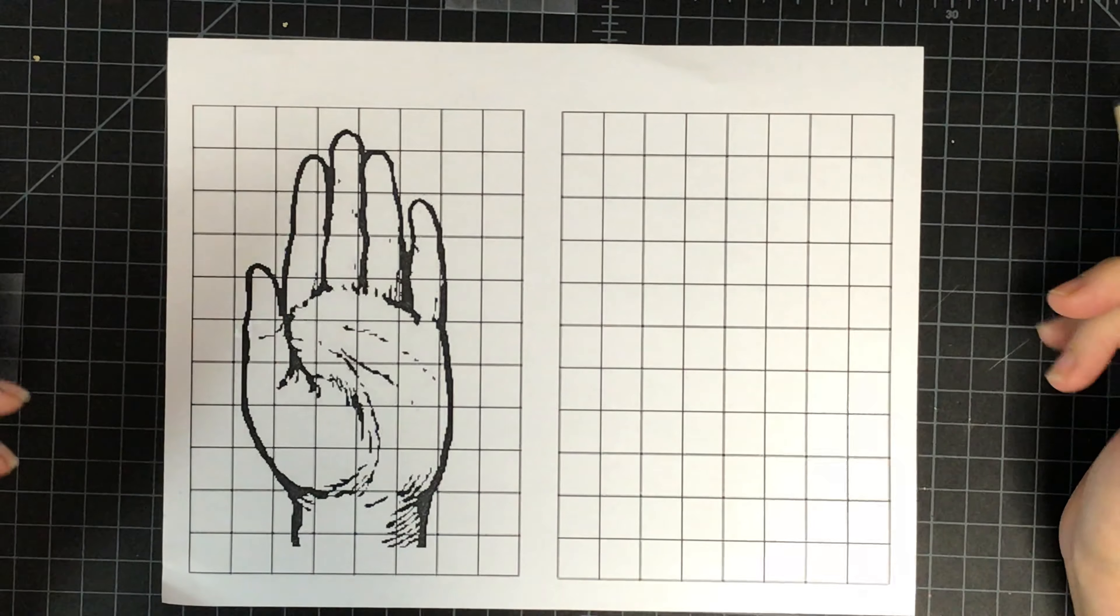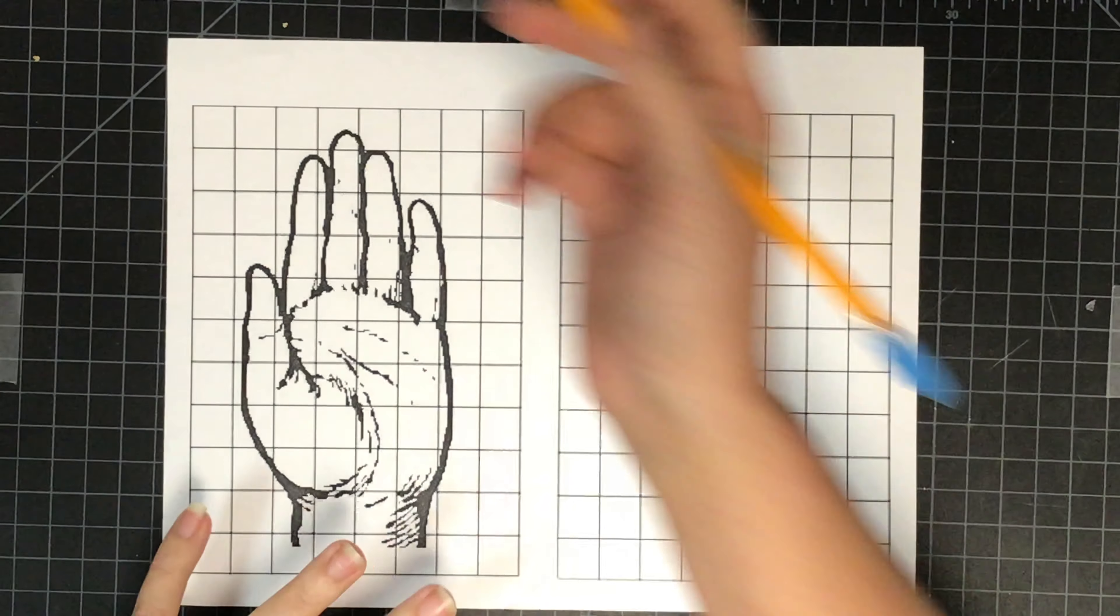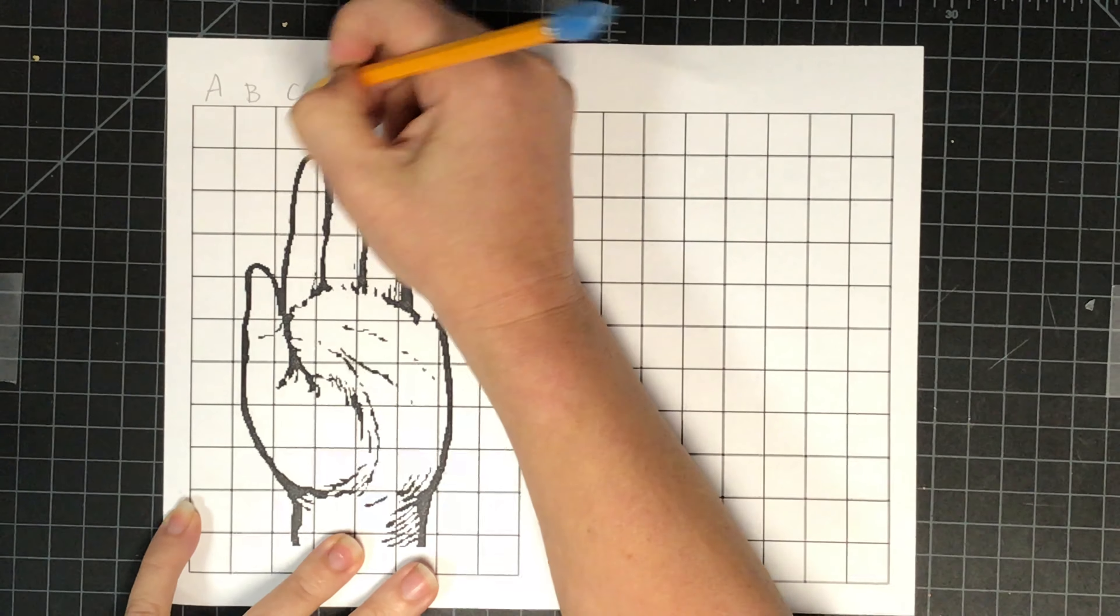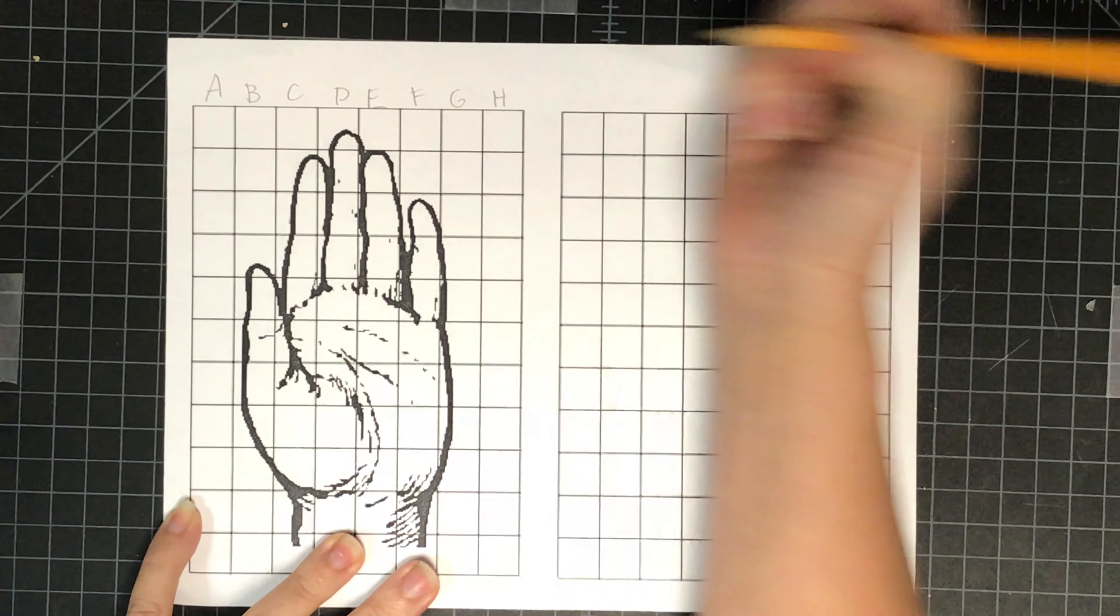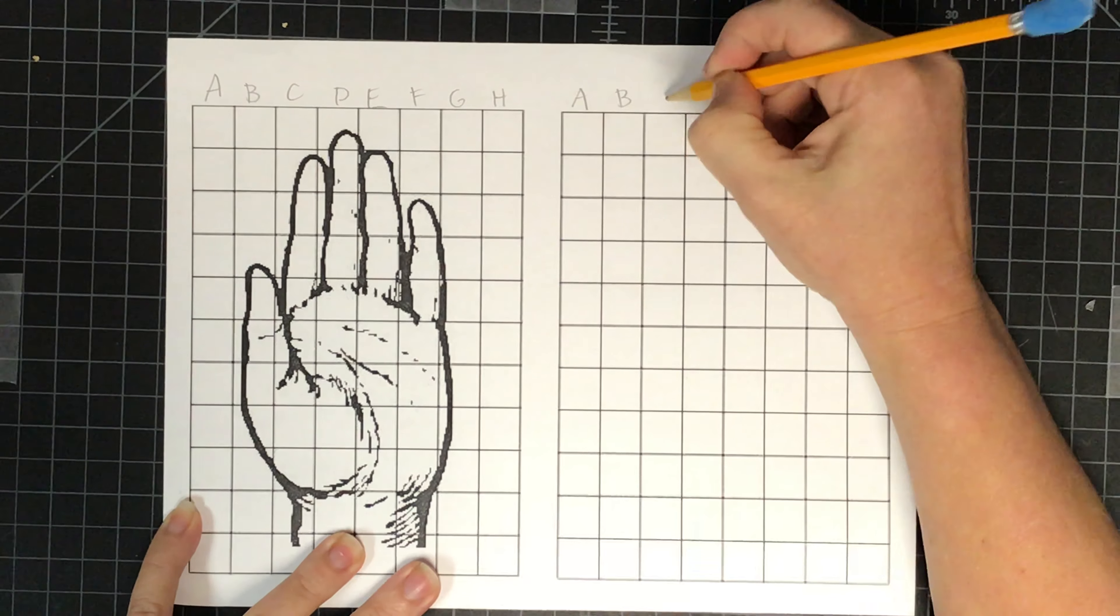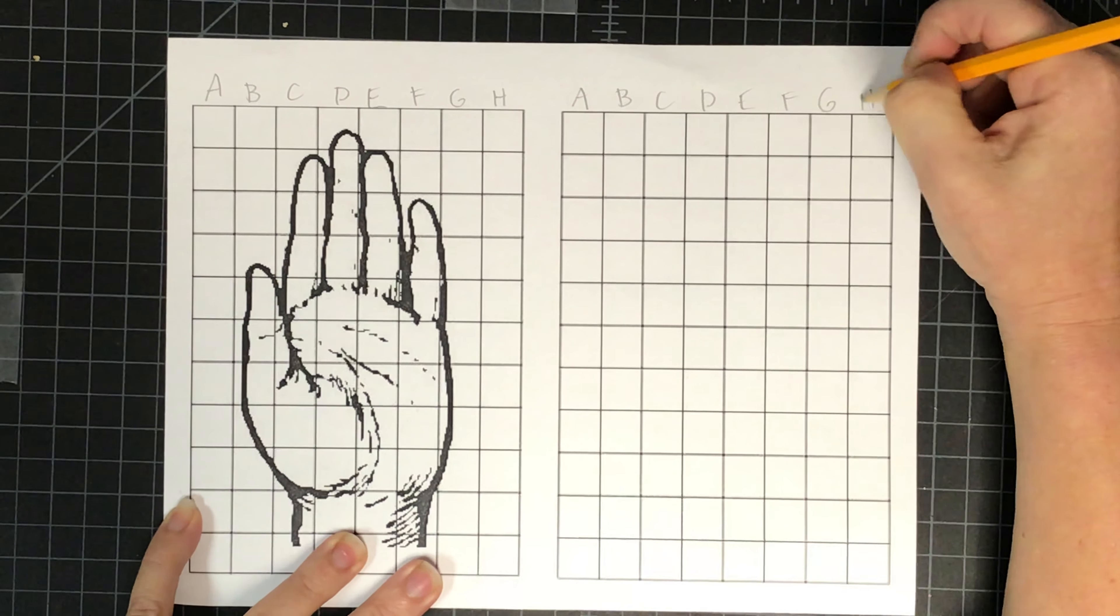The first thing we're going to want to do is label this. I'm going to do letters across the top, so A, B, C, D, E, F, G, H. Same thing over here - we want to label them the same, so we've got A, B, C, D, E, F, G, H.